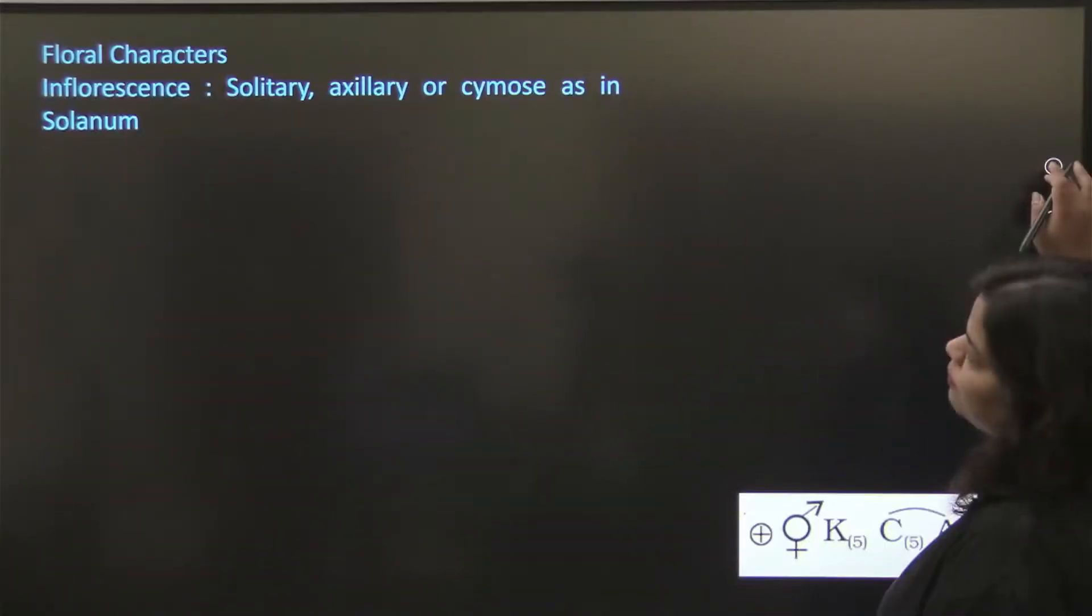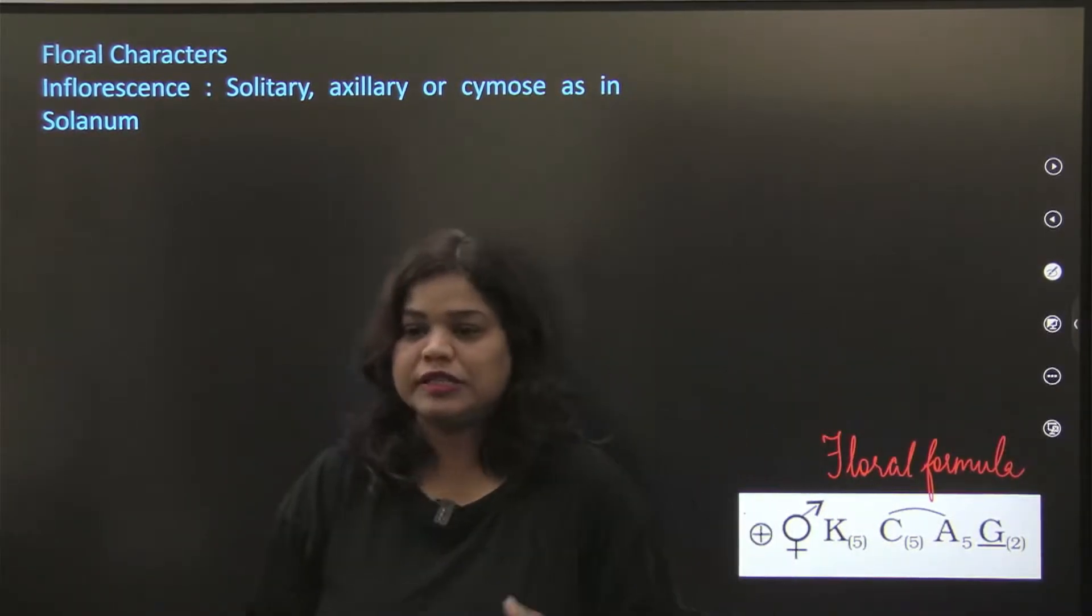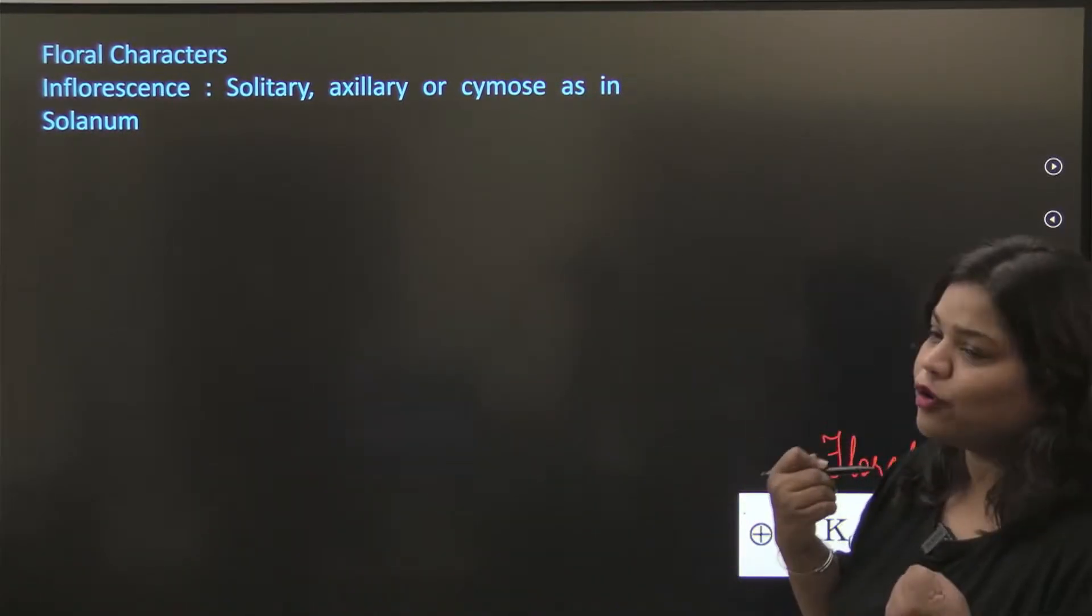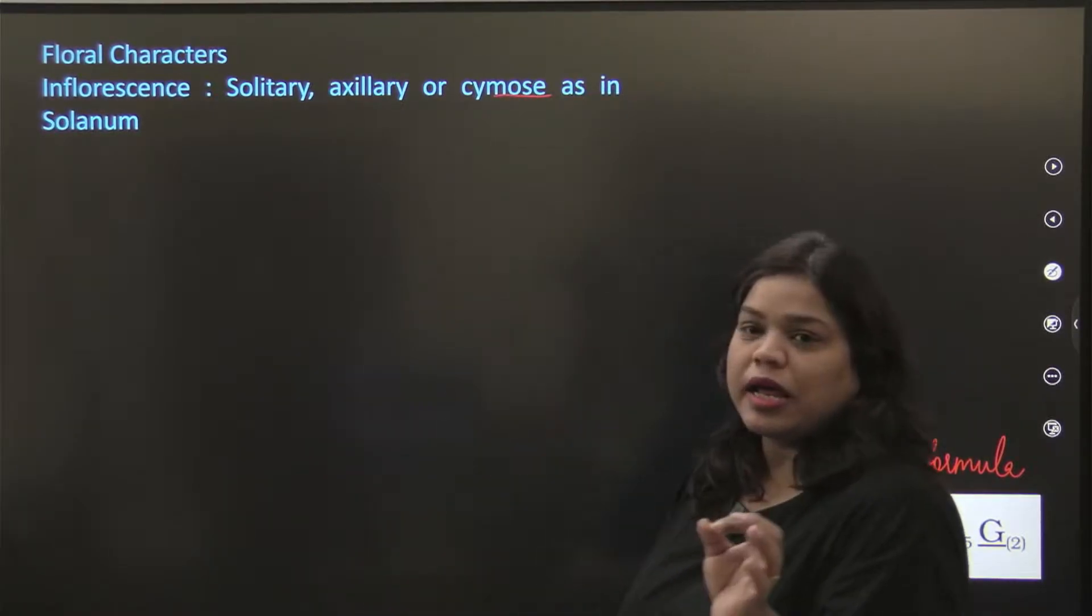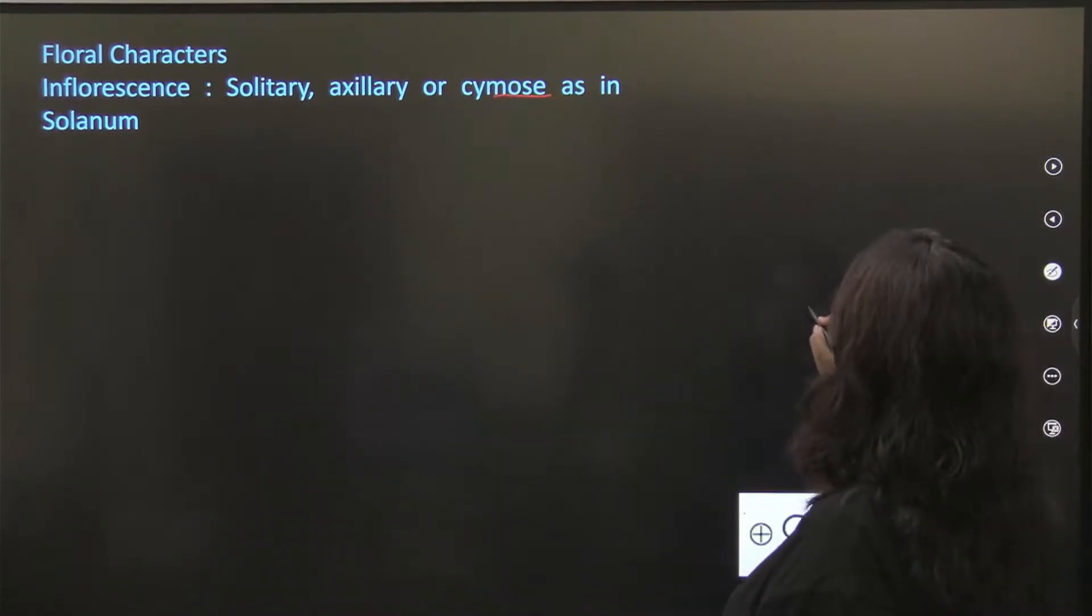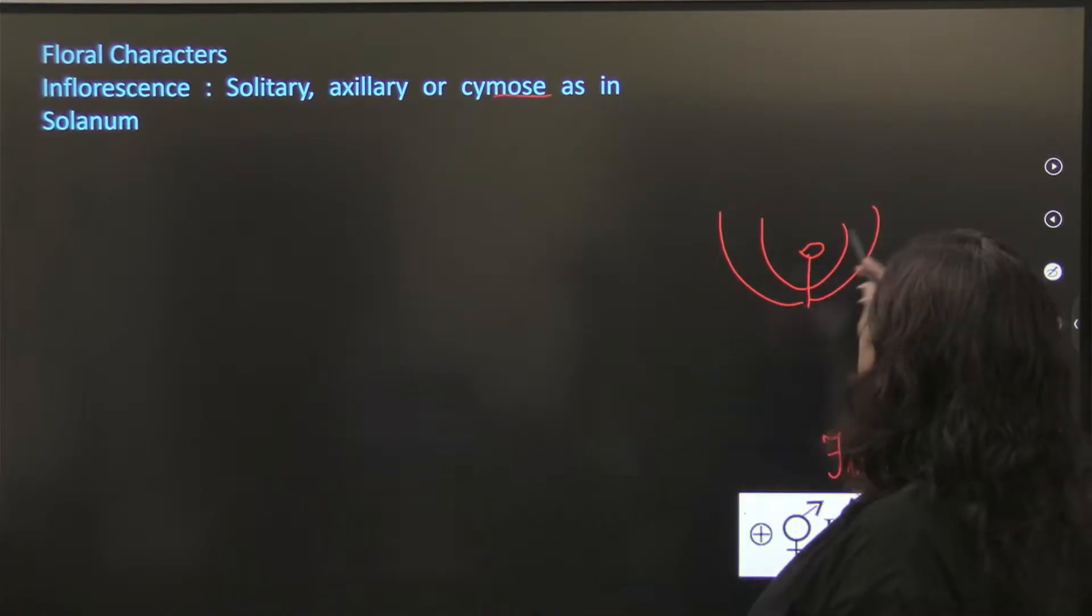Now what we will talk about, we will talk about the floral formula. This is your floral formula of Solanaceae in general. First, inflorescence. Solitary, axillary and cymose as in Solanum. This is basipetal. So from your side, for example, here your flower will come. So this is the top. This was your cymose, this is the top. You will come from the top.